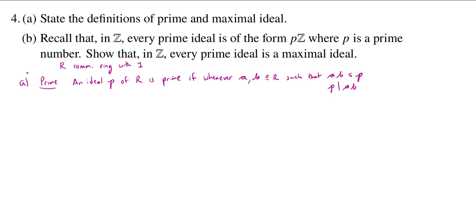Again, we're using our definition of divisibility being equivalent to subset containment. So if this happens, then we want P to divide A or P to divide B, or in terms of subsets, A is a subset of P, or B is a subset of P. So P divides A, or P divides B. So that's what we mean by a prime ideal.